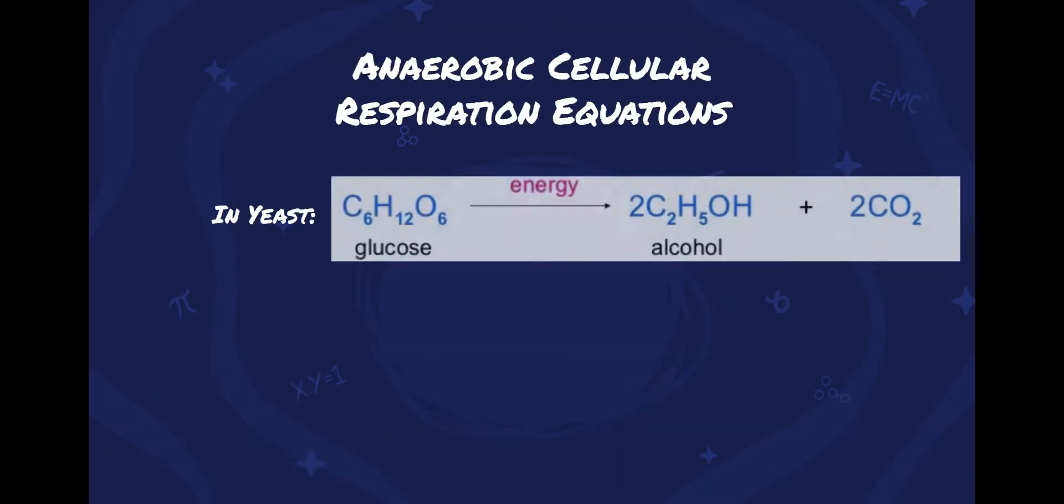So the first equation is in yeast. When you take the glucose, when there's no oxygen present, you add a little energy, and you end up getting alcohol and carbon dioxide. So yeast is used to ferment, for example, beer and wine, mostly beer. But why we use it is because one of the byproducts is alcohol and a little bit of carbon dioxide. Now, this again only nets two ATP. So we only get two ATP out of this.